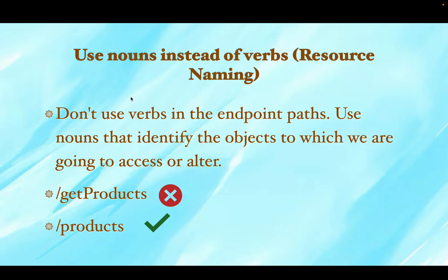While developing our REST APIs, we need to make sure that we name our resources as nouns and not as verbs. In REST API, everything is a resource, so we should not use verbs in our endpoint paths. Instead, we always need to use nouns. For example, whether I am creating, selecting, or modifying product information, I should name my endpoint as slash products — not slash get-products, slash create-products, or slash update-products.